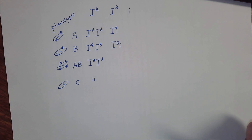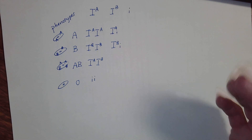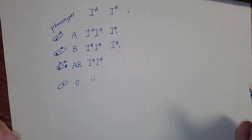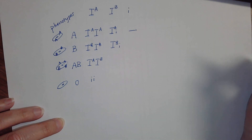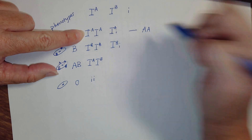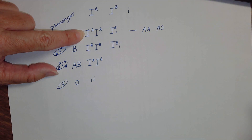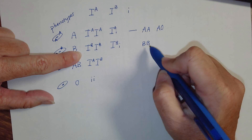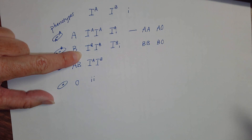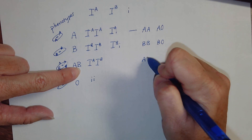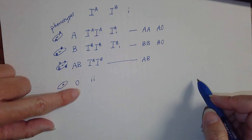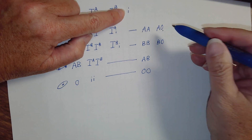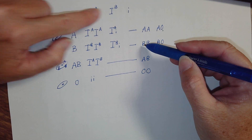Here's a shortcut for Punnett squares: instead of using the I notation, we'll use A, B, and O. Type A can be AA or AO; Type B can be BB or BO; Type AB can only be AB; and Type O can only be OO. The O's represent little i, and the A's and B's represent the capital I alleles.